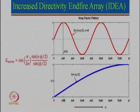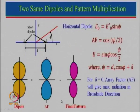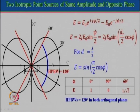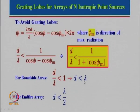If d equals lambda by 2 it will give rise to grating lobes. We can look at the very first two-element example: that was an end-fire array with d equal to lambda by 2, and that is why there is a grating lobe in that direction. Had we taken d less than lambda by 2, this grating lobe would not have occurred. If you are scanning the beam to say 60 degrees, cos(60) equals 1/2, so d/λ should be less than 2/3 for a beam maxima at 60 degrees.